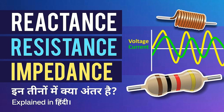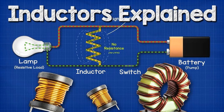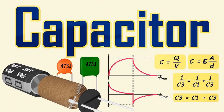Impedance matching: reactance is employed in impedance matching networks to maximize power transfer between different components or systems. Matching the reactance of the source and load ensures efficient energy transfer and minimizes signal reflections. These applications illustrate the significance of reactance in various aspects of electrical engineering, including circuit design, power distribution, signal processing, and system optimization. Reactance, along with resistance, forms the basis for understanding and analyzing AC circuits and plays a vital role in the design and operation of many electronic devices and systems.